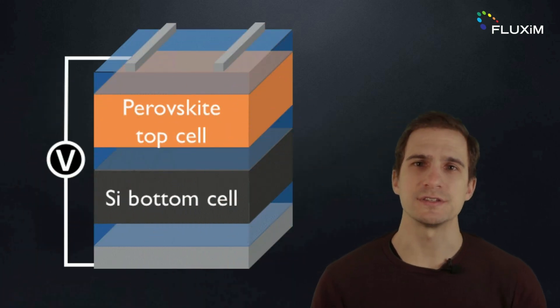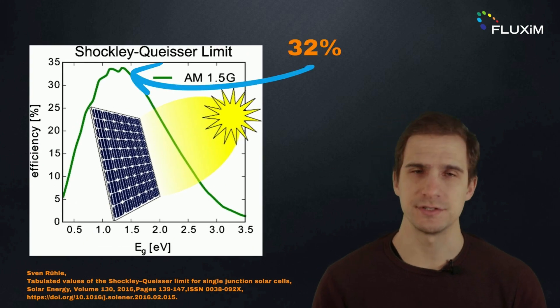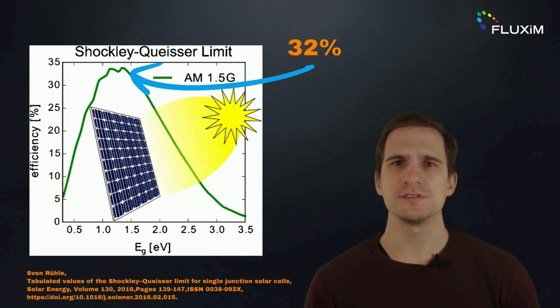Multi-junction solar cells combine multiple light-absorbing materials into a single device, exceeding the theoretical Shockley-Queisser efficiency limit. This means more efficient and cost-effective solar energy.